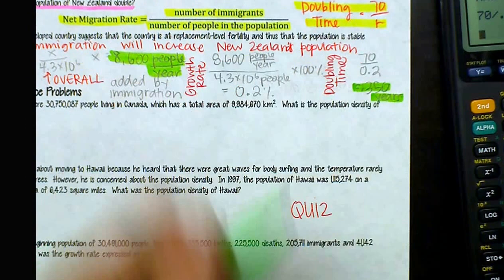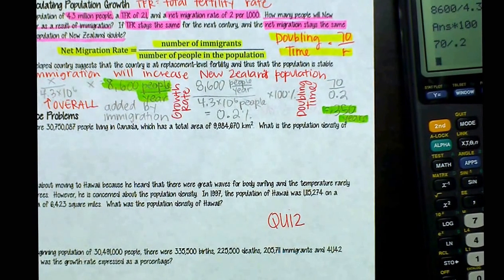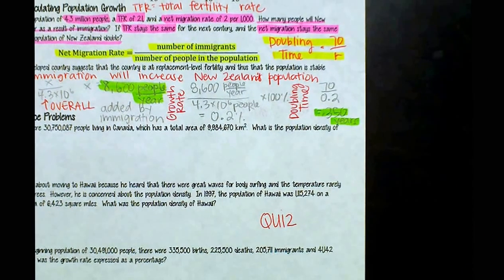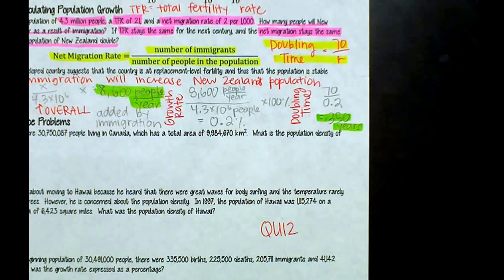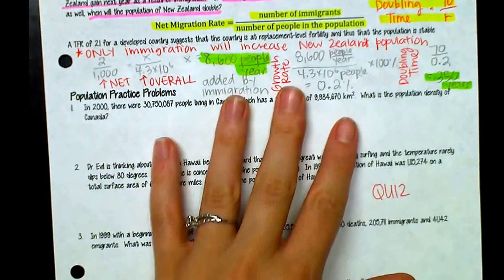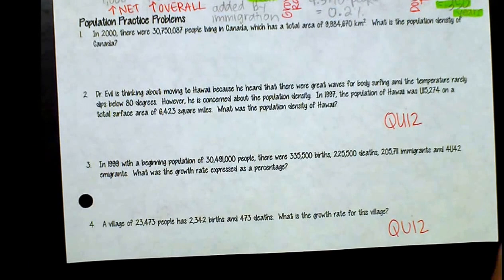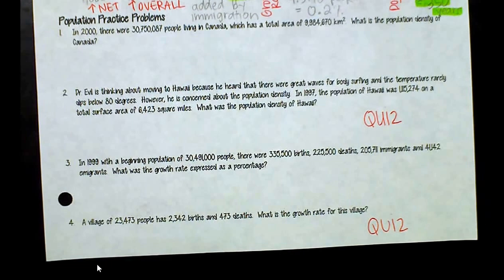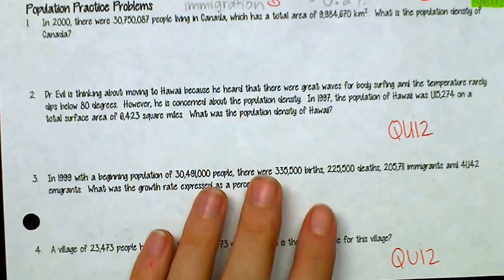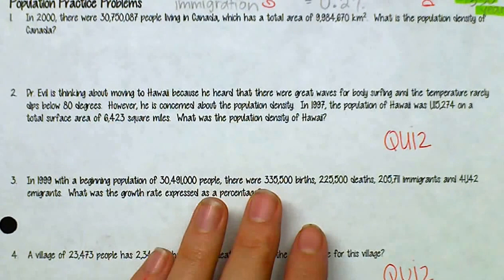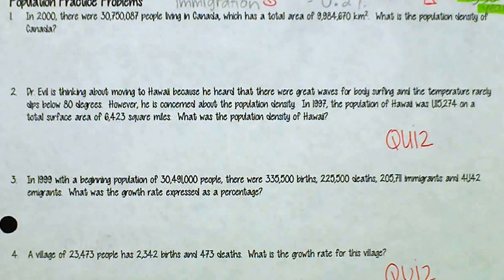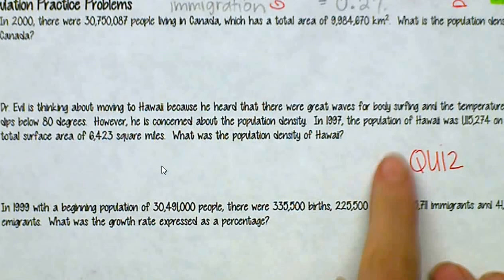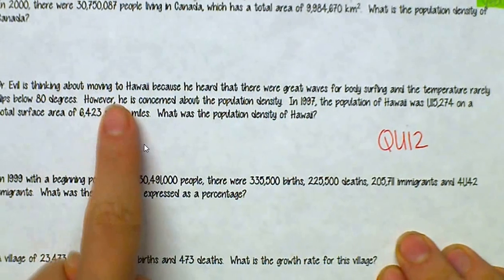Now I have a few population practice problems that might show up on the actual exam. Usually on exams they use simple numbers, but since you have a calculator we'll use different numbers. These will be quizzes on Schoology instead of WSQ forms — whenever you see the word 'quiz,' you'll show your work and get it stamped off, then answer the question on the quiz.